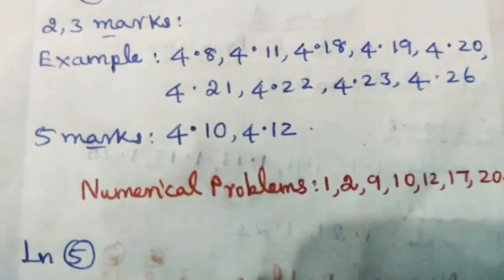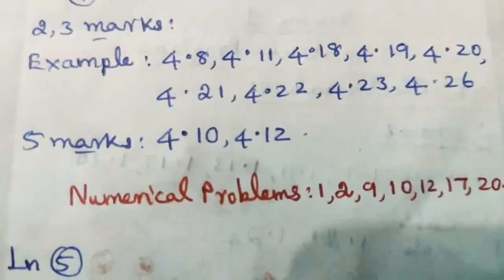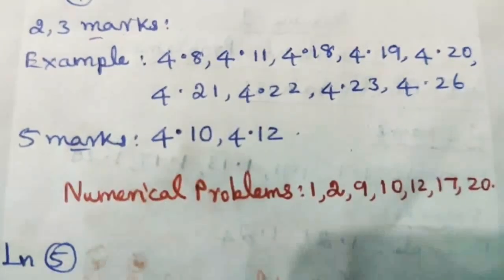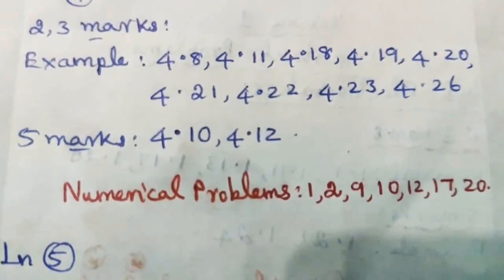5 marks examples: 4.10, 4.12. Numerical problems: 1, 2, 9, 10, 12, 17, 20.